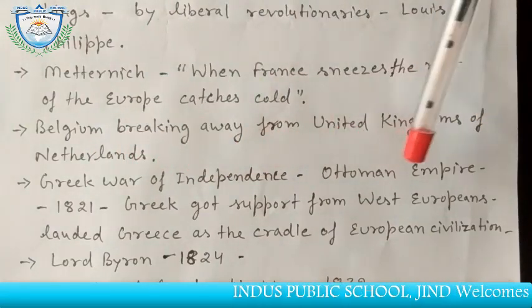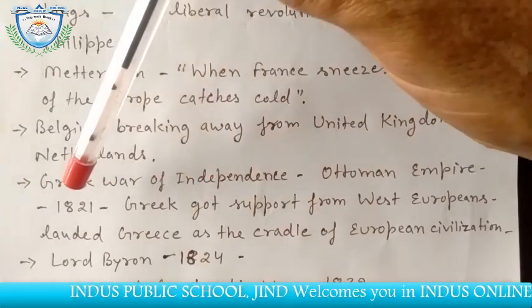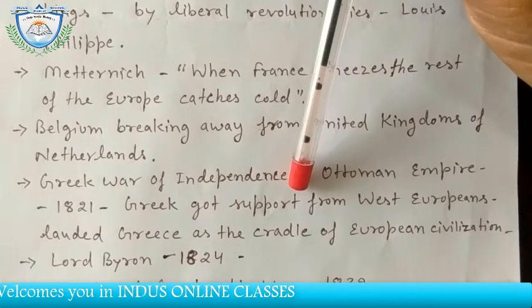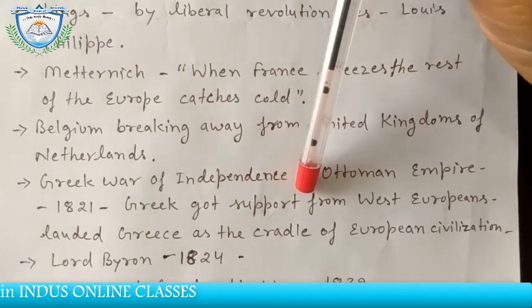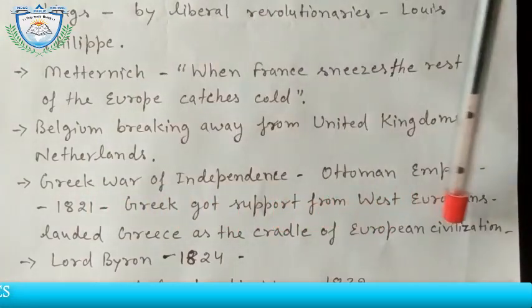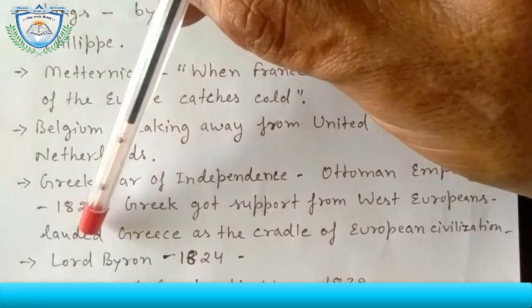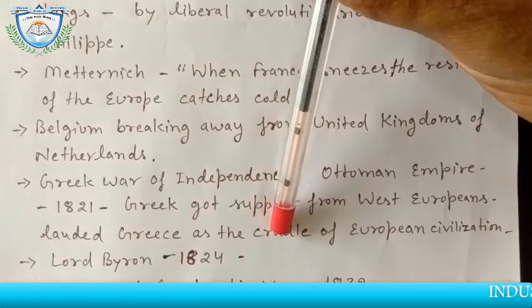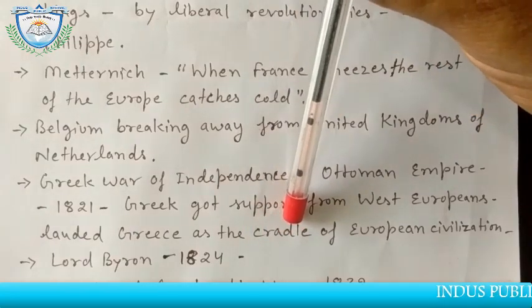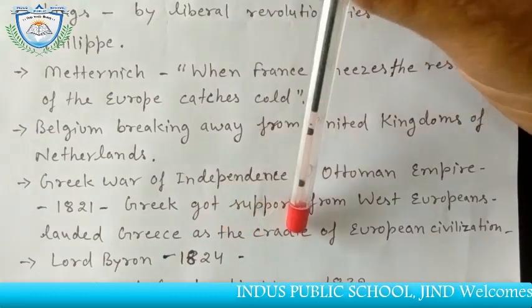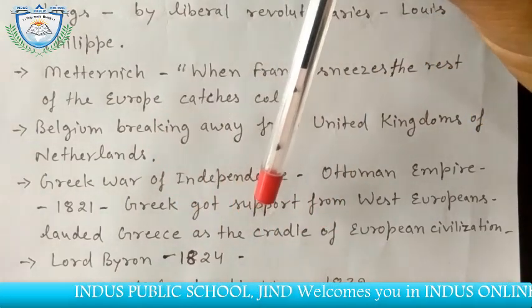Greece was part of the Ottoman Empire, which was a Muslim empire. The Greek War of Independence started in 1821, where Greek people got support from other Greeks living in other countries of Europe, and also from West Europeans. West Europeans helped the Greek people because they regarded Greece as the cradle of European civilization — 'cradle' meaning the place that nurtures, just as a mother rocks a baby in a cradle — and in the same way, Greek culture and civilization had guided the other countries of Europe throughout history.